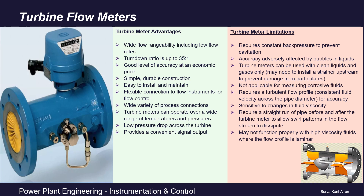They require a turbulent flow profile with consistent fluid velocity across the pipe diameter for accuracy, and are very sensitive to fluid viscosity. They require a straight pipe section before and after the turbine meter to allow any swirl pattern in the flow stream to dissipate. In the case of high viscosity fluids, they may not function properly.